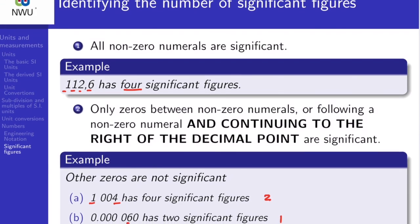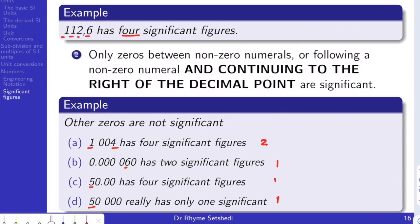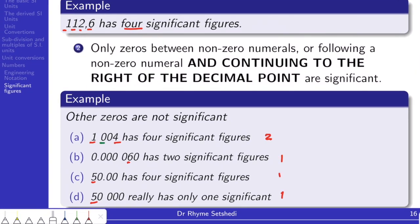We then look at the zeros. And with zeros, there are two conditions. Firstly, all zeros that are between non-zero numbers are significant.